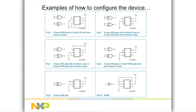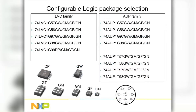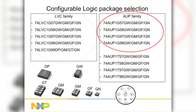It also reduces the number of components that need to be held in inventory at production time. Our configurable logic functions are available in two technologies: LVC, which operates from 1.8 volts to 5.5 volts, and AUP, which operates from 1.2 volts to 3.6 volts.